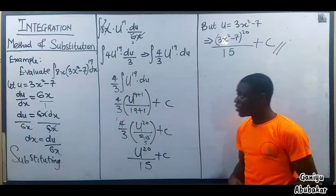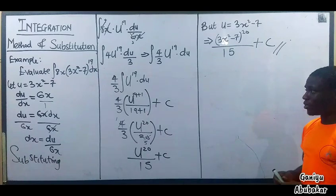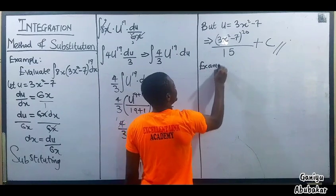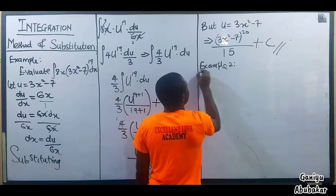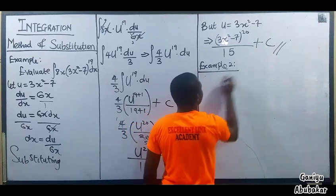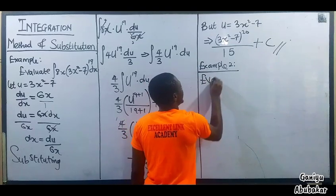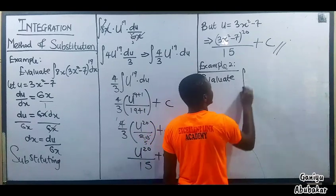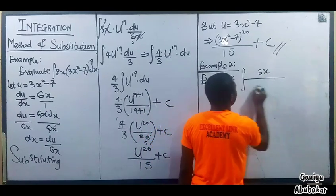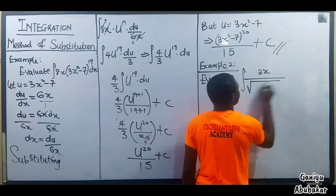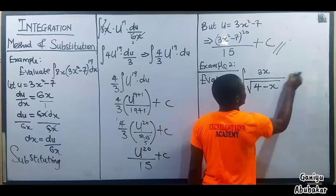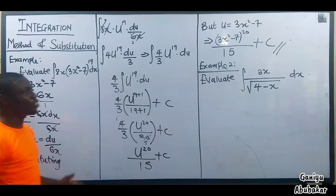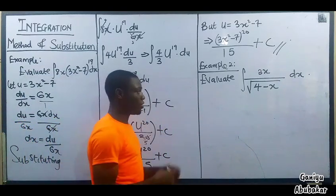That completes Example 1 using the substitution method. Now Example 2: evaluate the integral of 3x over the square root of (4 - x), dx. I am going to integrate 3x over root (4 - x). What do I do?